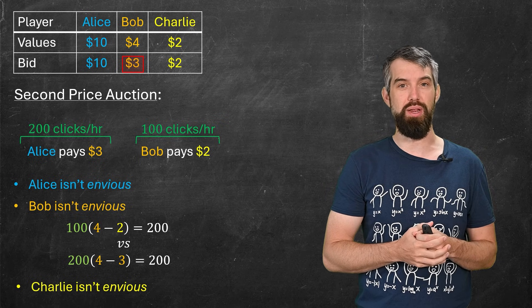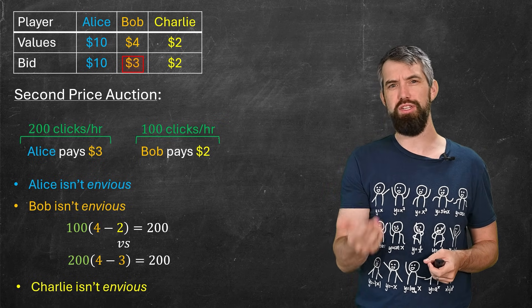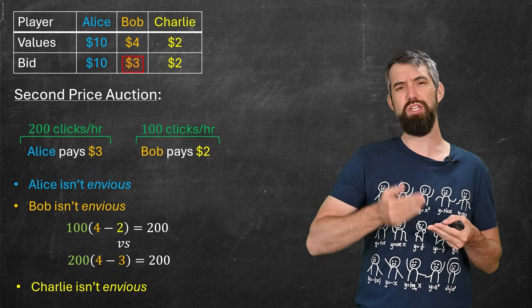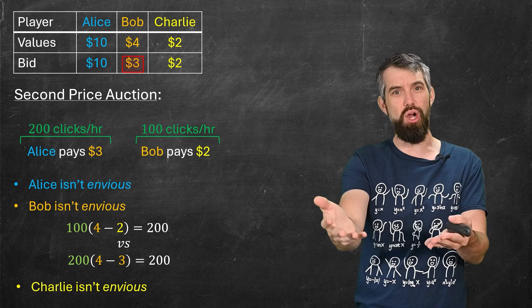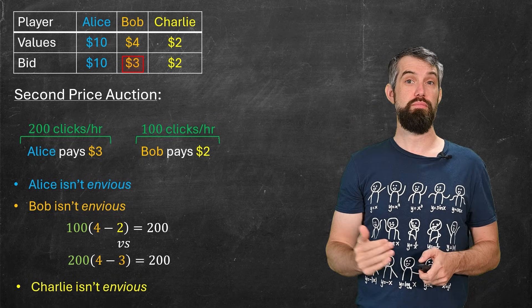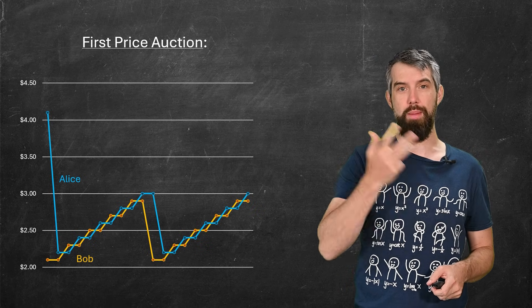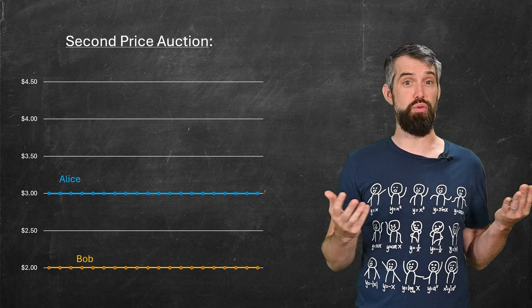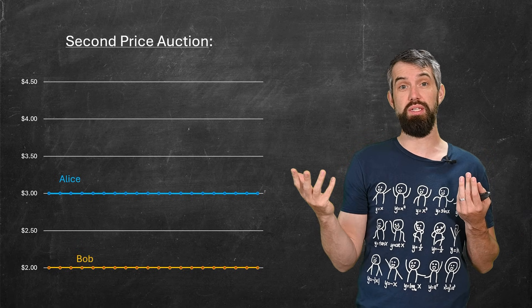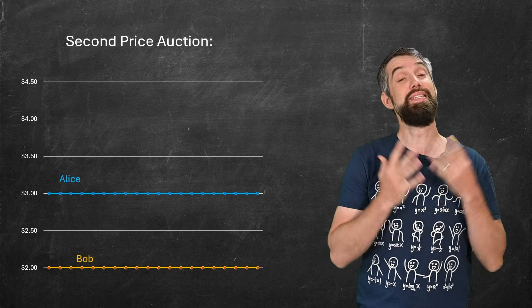So Bob isn't envious. And Charlie isn't envious. I mean, it sucks that Charlie doesn't get to make any money. But Charlie doesn't want to pay more than $2. So Charlie doesn't want to go into Bob's spot. He'd make $0 a profit if he did go into Bob's spot. And so instead of the chaos that we had with a first price auction, we're going up and down, up and down, up and down. What you have is this much more stable situation. Alice is just paying $3 every single time. Bob is paying $2 every time. Charlie doesn't make anything. It's stable.